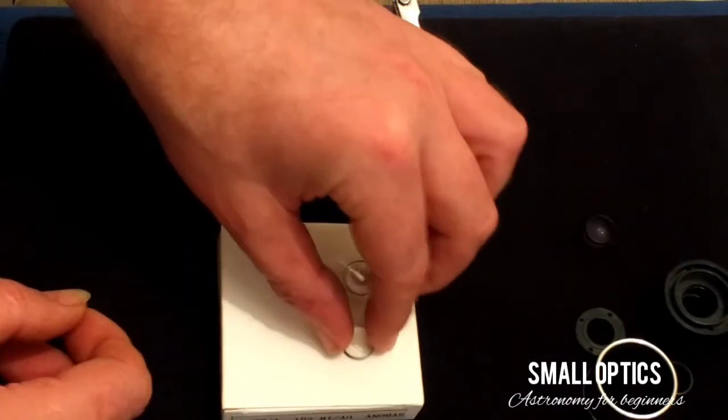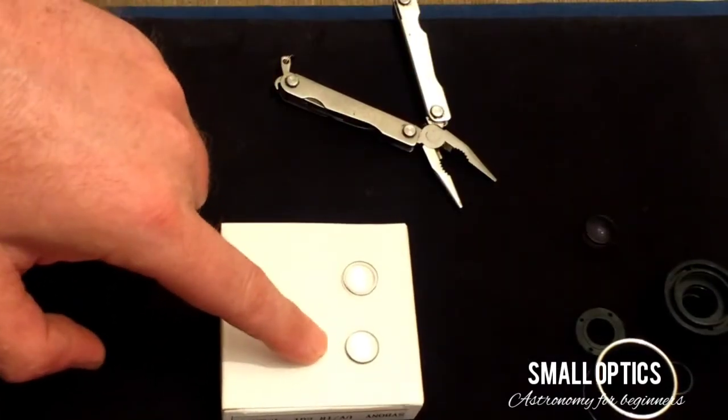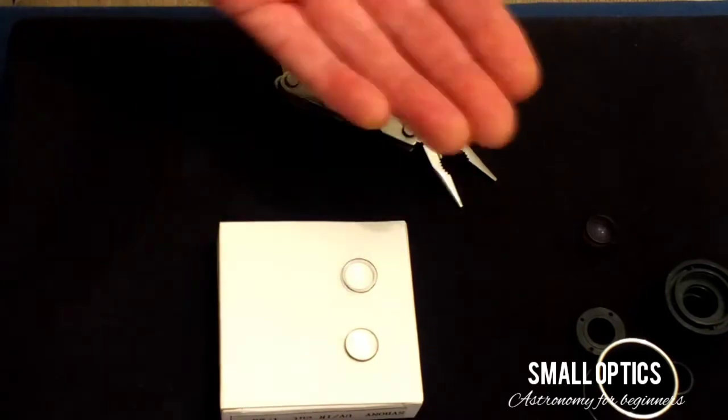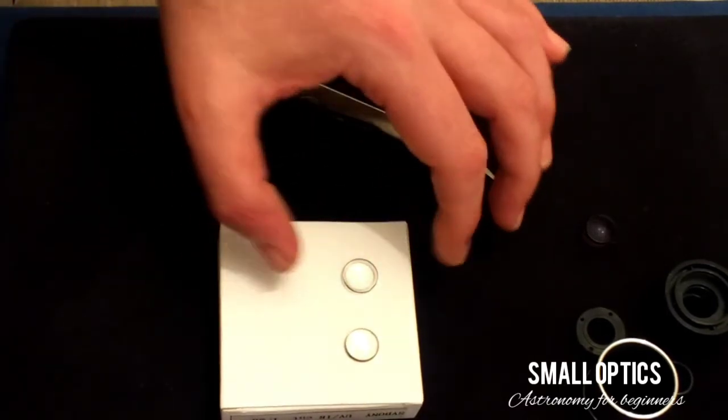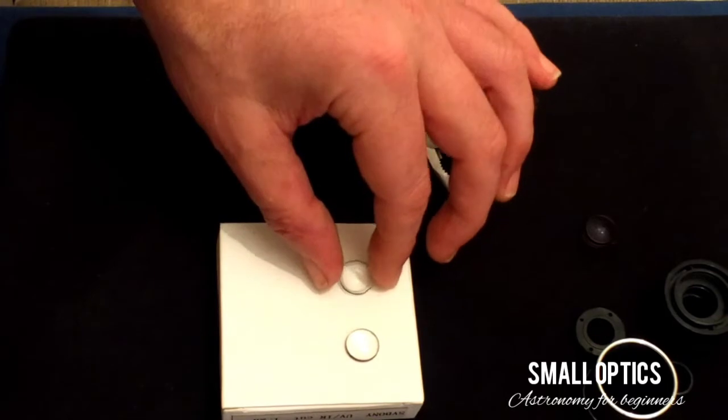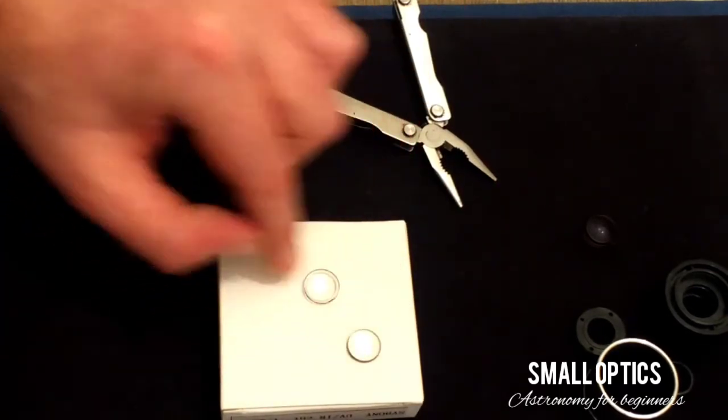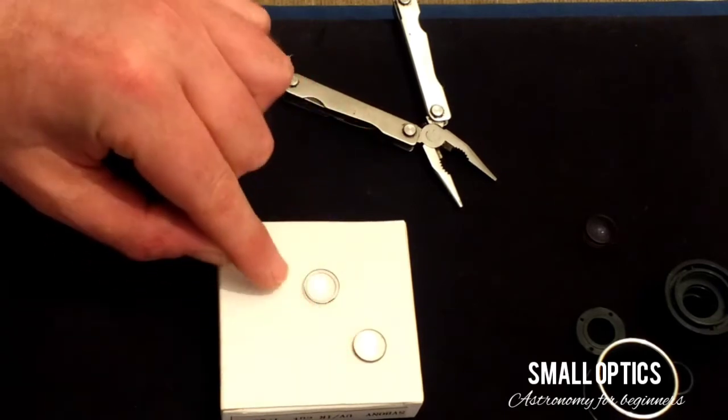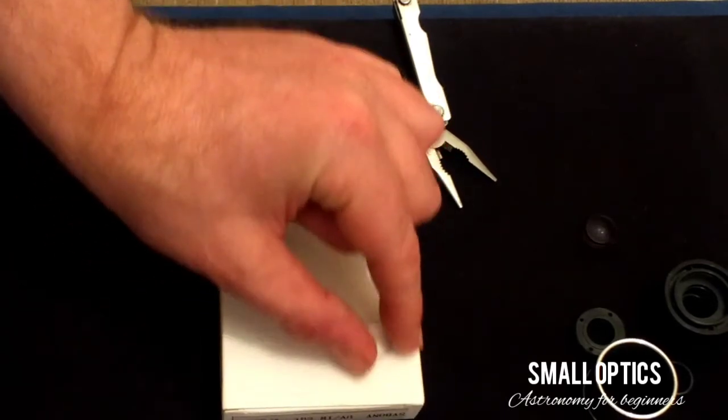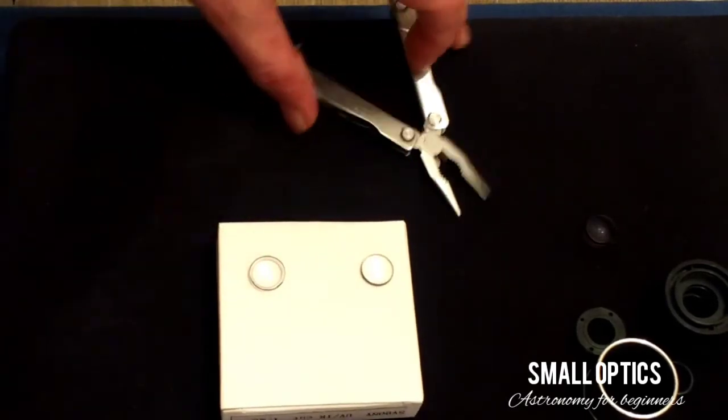This lens here I've got here now, this is out of a modified achromat, the one that you usually get supplied with most telescopes, especially Sky Watchers. And this is your aspheric part again. This is glass, this is plastic, this is the aspheric, this is the modified achromat.